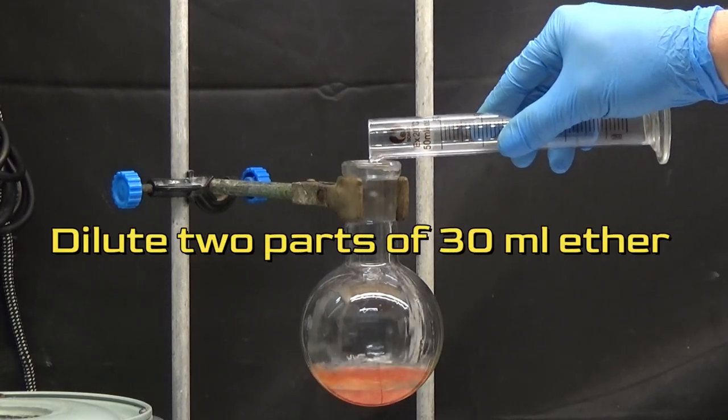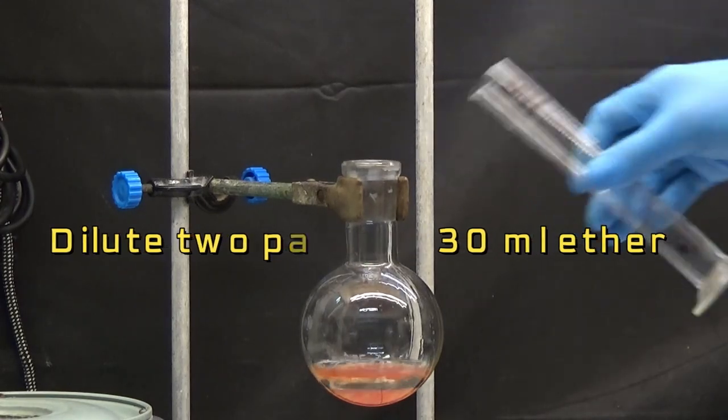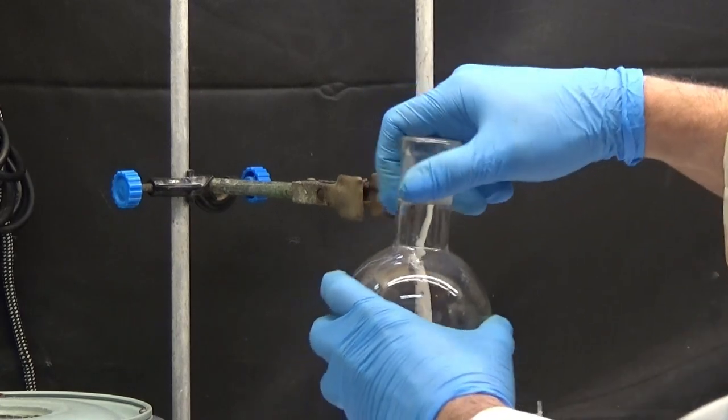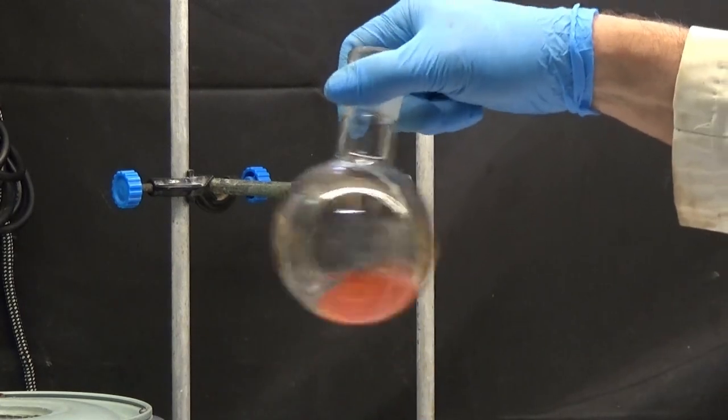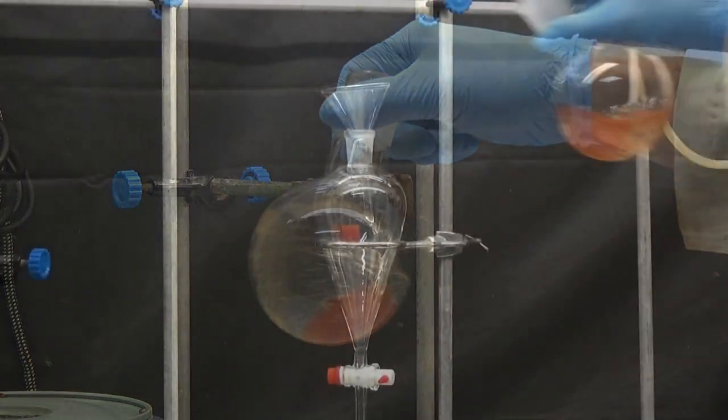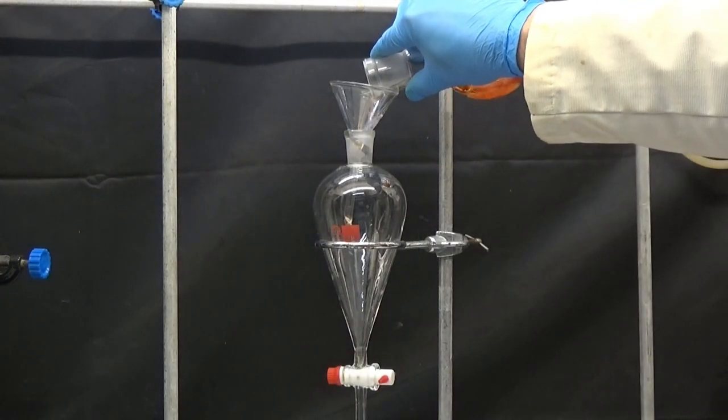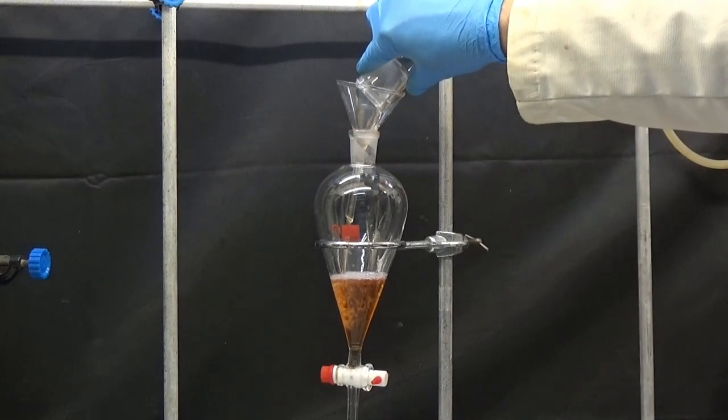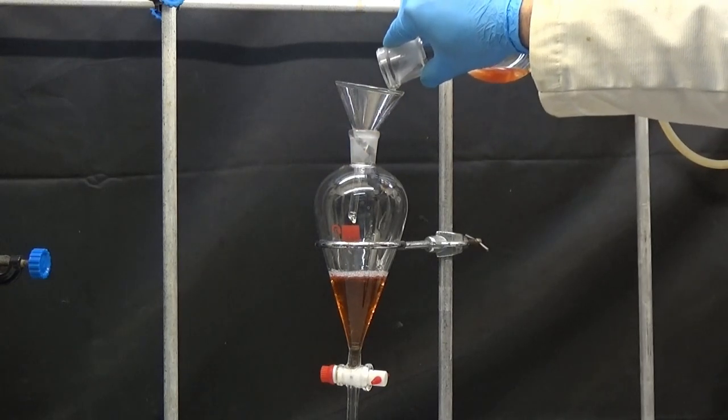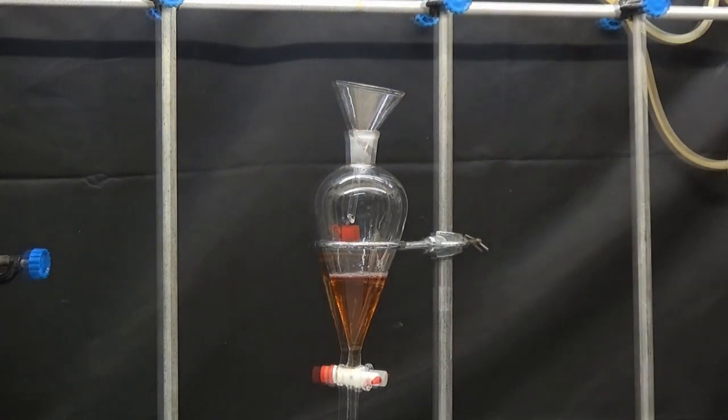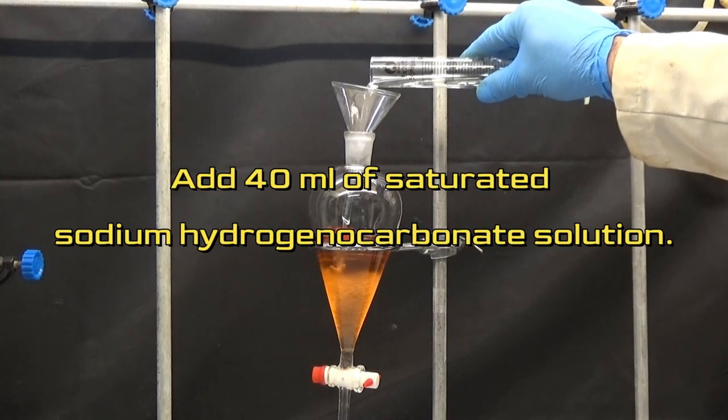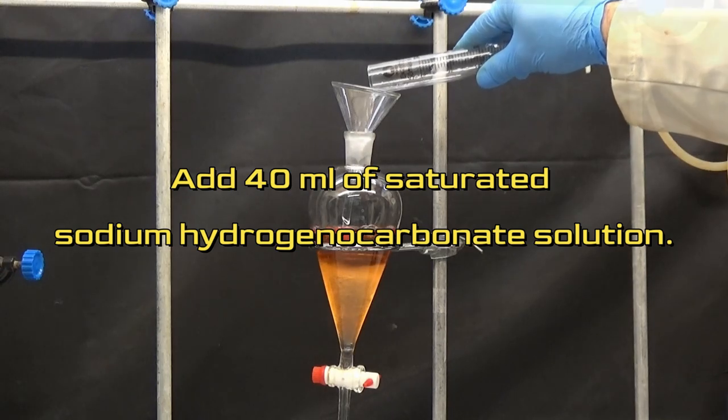Dilute the product with two parts of 30 ml ether and place in a 250 ml separator funnel. Add 40 ml of saturated sodium hydrogenocarbonate solution.